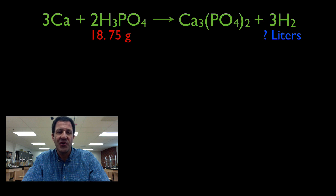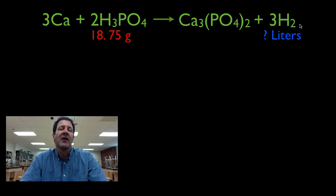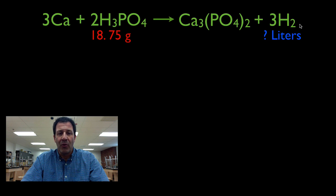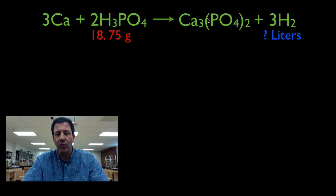Here's our chemical equation. It says calcium plus phosphoric acid is going to yield calcium phosphate plus hydrogen gas. We need to remember that our chemical equations are molar relationships, not gram relationships. So with our coefficients, we have three moles of calcium plus two moles of phosphoric acid yielding one mole of calcium phosphate and three moles of hydrogen gas.